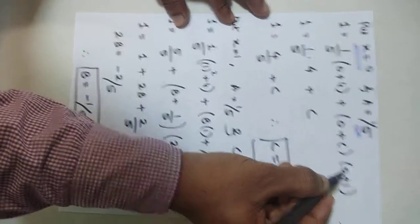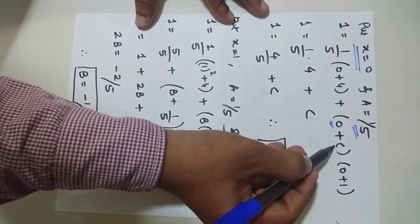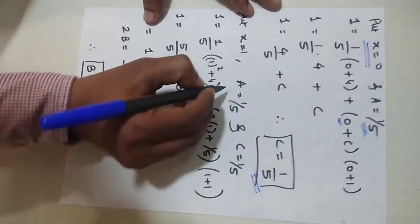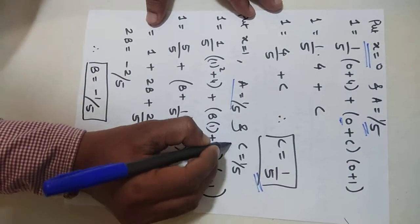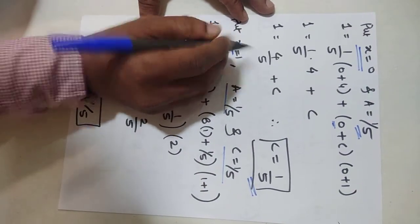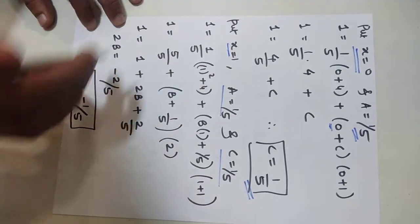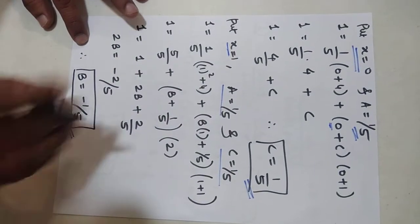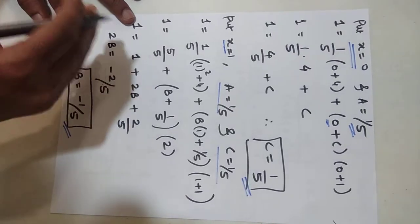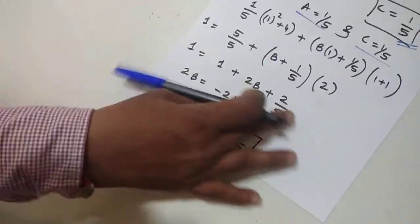Next, put x = 0 and use the value of A = 1/5. Substituting gives B = 0. Then put x = 1 (any random value) to find the remaining unknown. This gives us the value of B and C. So we now have A, B, and C.